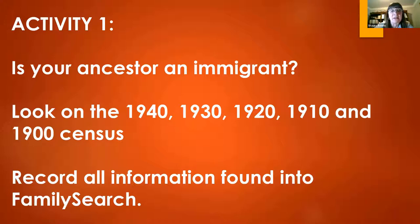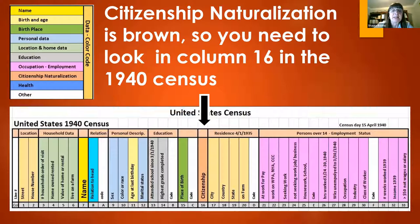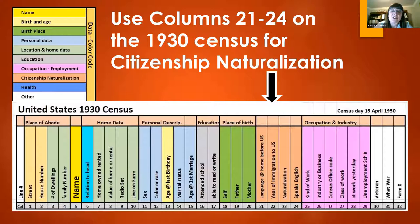Activity one, the first challenge, is to figure out if your ancestor was an immigrant. If they were, you'll want to look at the 1900, 1910, 1920, 1930, or 1940 census and record the information you find onto FamilySearch. In the 1940 census, look for citizenship or naturalization — brown color on the color code — in column 16. In the 1930 census, you have four columns: language spoken at home before the U.S., year of immigration, whether they're naturalized, and whether they speak English.